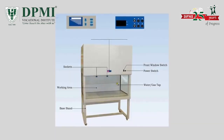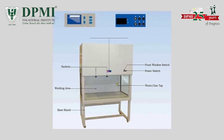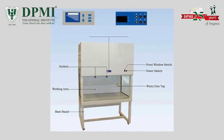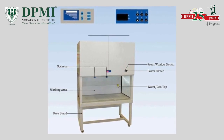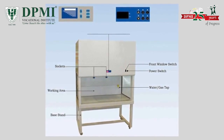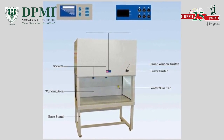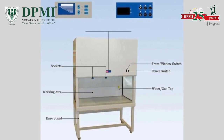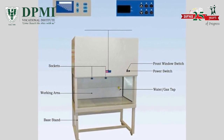A laminar flow cabinet consists of the following parts. The cabinet is made up of stainless steel with less or no gaps or joints, preventing the collection of spores. A flat working station is present inside the cabinet for all processes to take place.